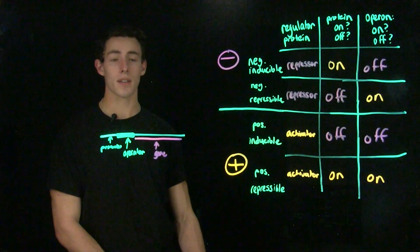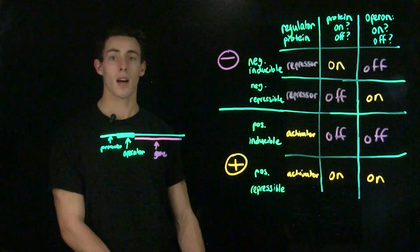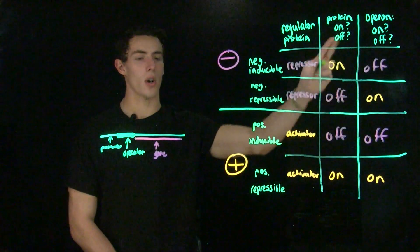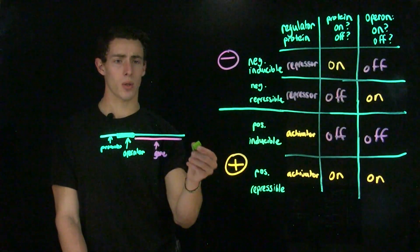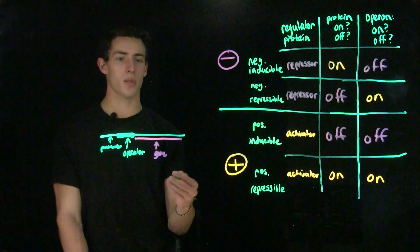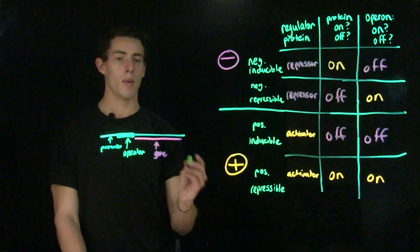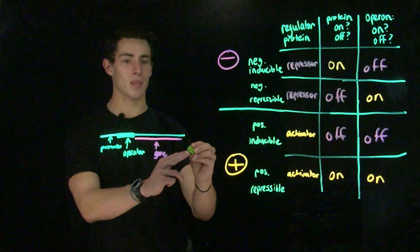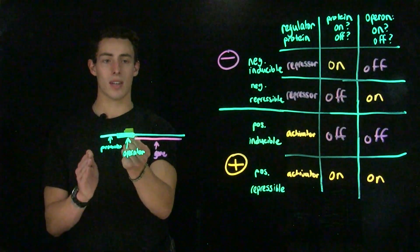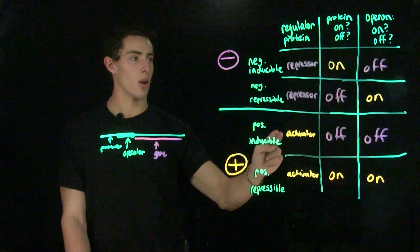Now we're going to discuss the positive inducible operon. It is important to note that while in nature, it is fairly rare to find positive control, there is one in a later section that we will be discussing. A positive inducible operon has an activator protein, which is going to start in an inactive configuration, and thus our operon will be off when we start. The regulatory protein cannot bind to the operator, and because it cannot bind, it cannot activate transcription, so transcription is not going to occur. But when a molecule called an inducer comes in, the inducer is going to bind to this molecule and change it into an active configuration. This activated regulatory molecule is going to be able to bind to the operator and activate transcription.